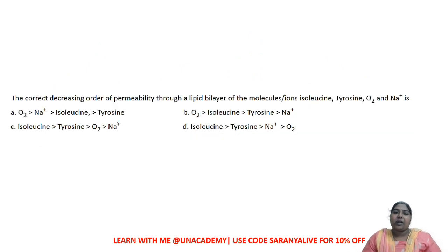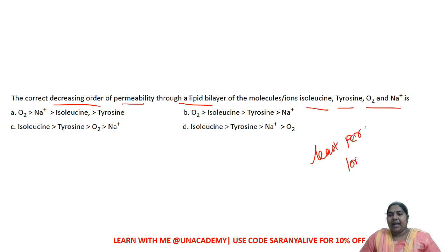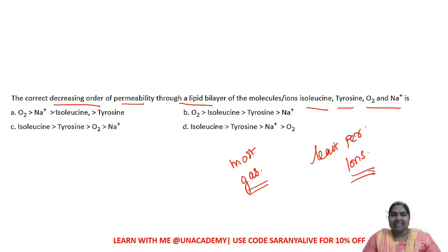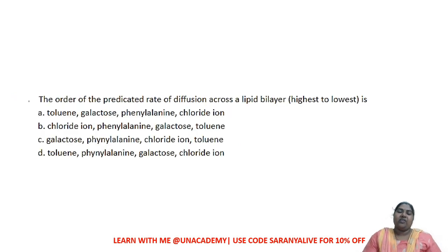Let's take one more question: the correct decreasing order of permeability through a lipid layer containing ions, isoleucine, tyrosine, oxygen, and Na+. The least permeable will be ions and the most permeable will be the gas. Options C and D are eliminated because the most permeable must be the gas. Between the remaining options, option B is the correct answer.